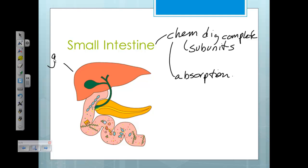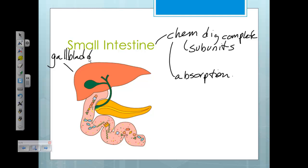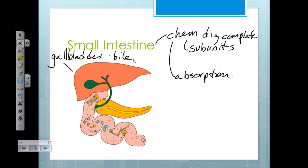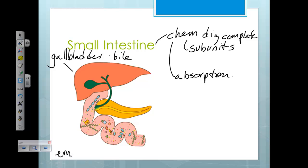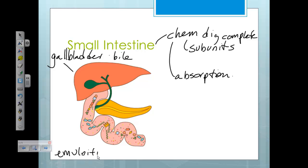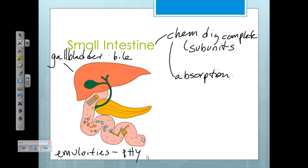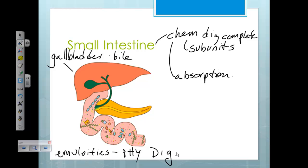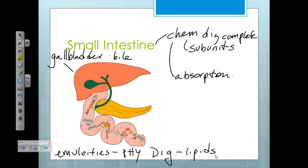The small intestine is connected to two accessory organs. The gallbladder stores and releases bile. Bile is an emulsifier, which is a very good example of physical digestion — it emulsifies our lipids, our fats in our diet.